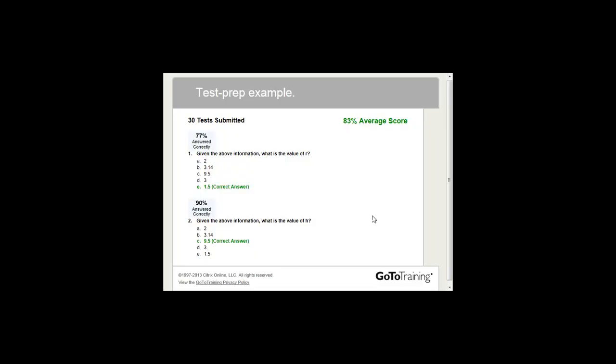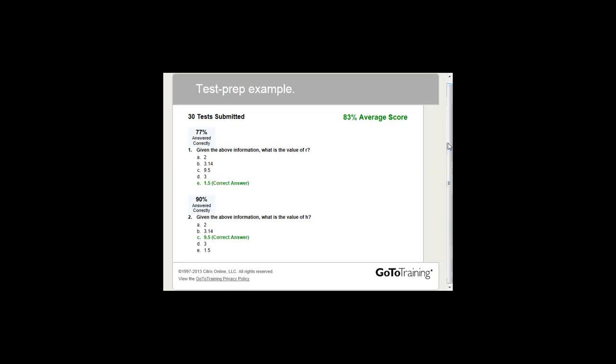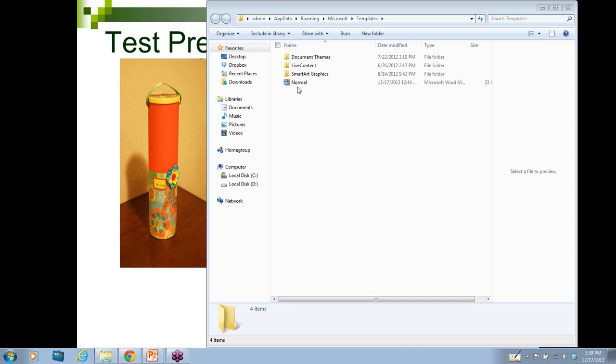Here are the results. It looks like most of you were able to get the second question right. Let's go back — the correct answer: when given the diameter of 3 inches, the diameter means the full measurement all the way across the can, and since we just need the radius, we divide that in half. The height was 9.5 inches, since we're talking about inches tall.